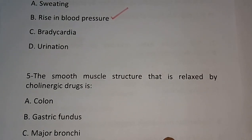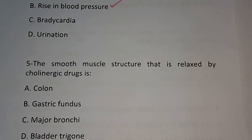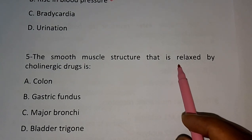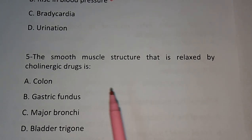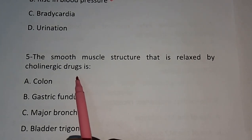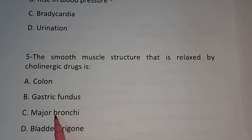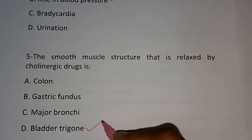Question number five: The smooth muscle structure that is relaxed by a cholinergic drug is — (A) colon, (B) gastric fundus, (C) major bronchia, (D) bladder trigone. The correct answer is bladder trigone.